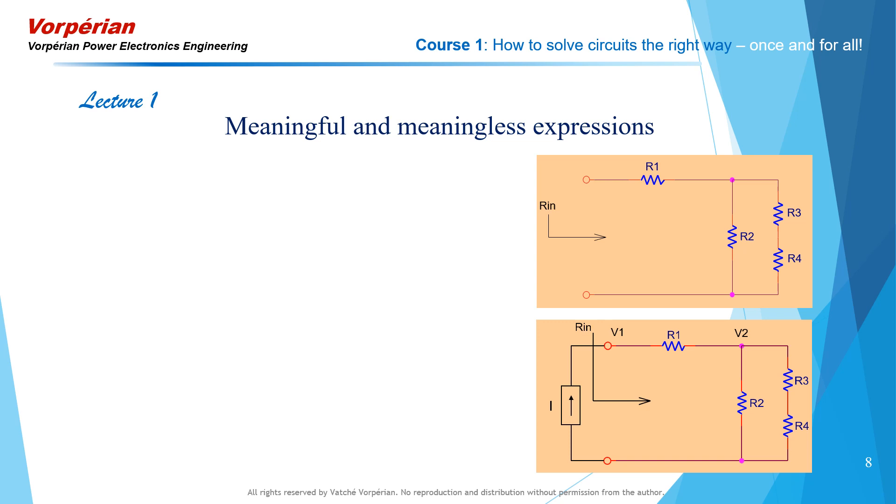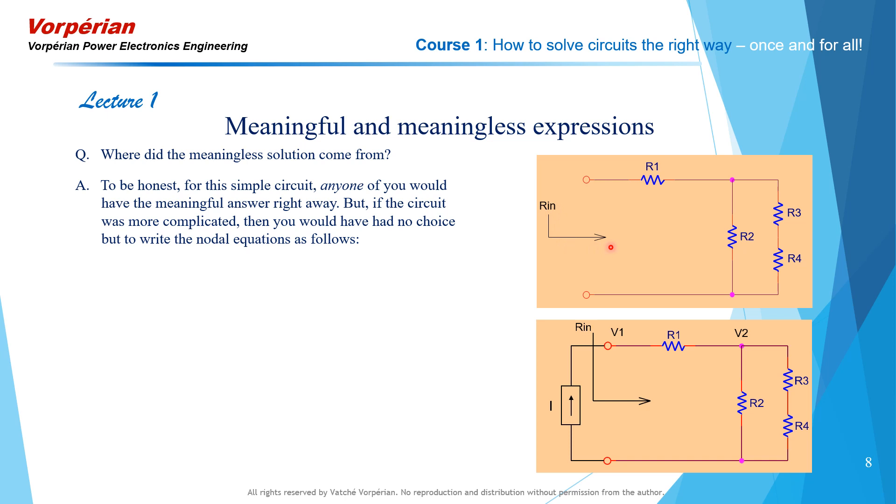Now we ask ourselves, where did that meaningless solution come from? To be perfectly honest, for a simple circuit like this, when you're asked to determine the input resistance, you don't even have to perform any analysis - you just look at it and you say it's R1 plus R2 in parallel with R3 plus R4. But if the circuit was more complicated, then you would have had no choice but to write the nodal equations - that is to say, until you've learned the techniques I'm going to teach you in this course. If we write the nodal equations for the circuit, this is what we obtain. We connect the test current source at the input and we determine the voltage V1. We write the nodal equations at V1 and V2. At V2, the sum of the currents entering that node must be equal to zero. Same thing for V1.